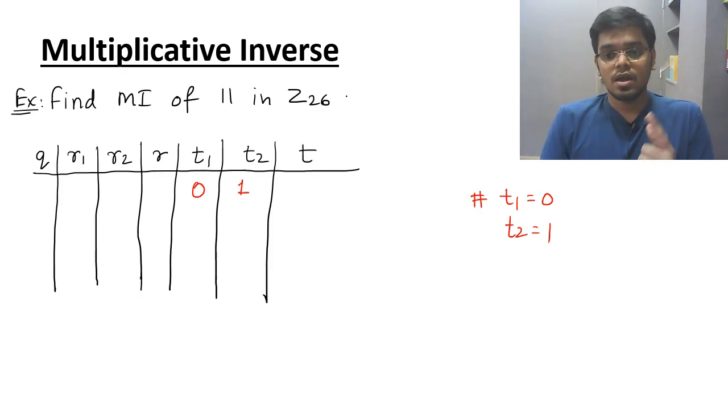R1 is the highest or you can say the greatest value among the two numbers. So 11 and 26. Which one is the greatest? 26. So R1 would be 26 and R2 would be 11.